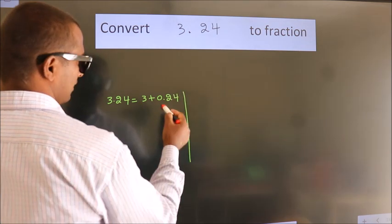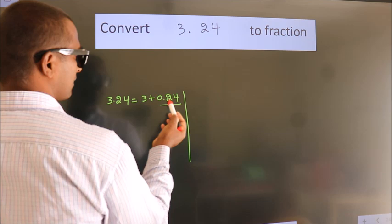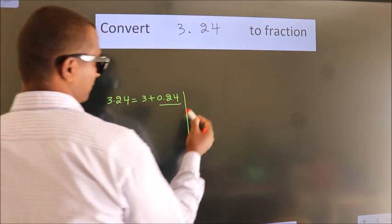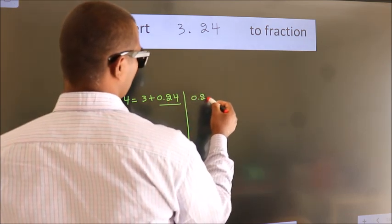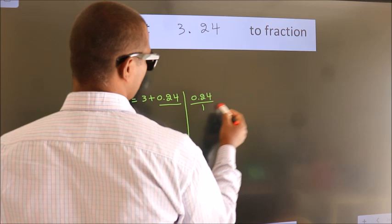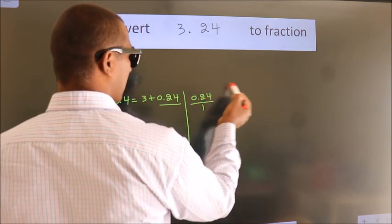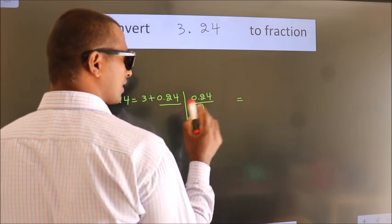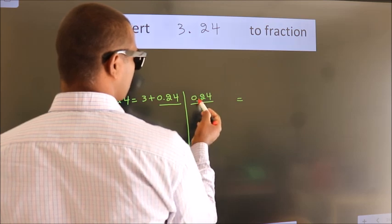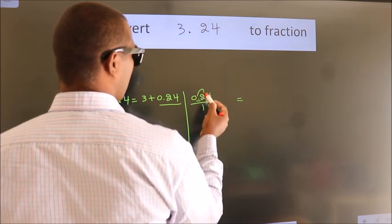Next, convert this to fraction. So 0.24. To convert this to fraction, we have to move this decimal after two numbers.